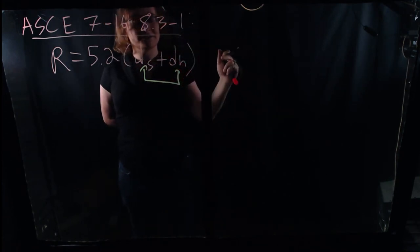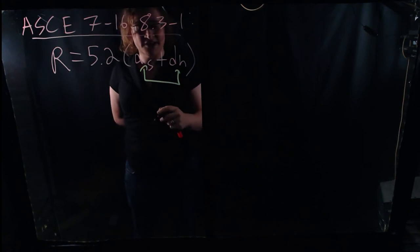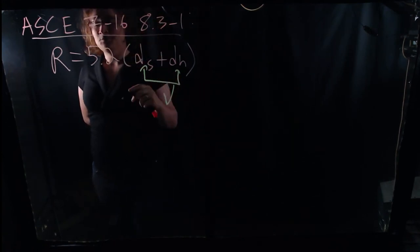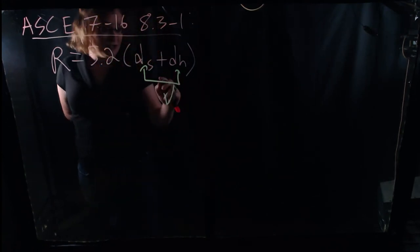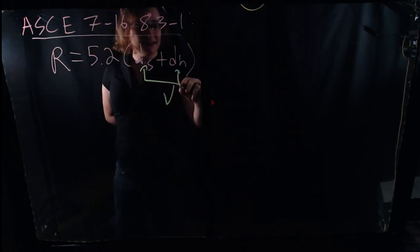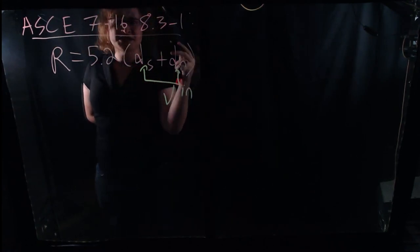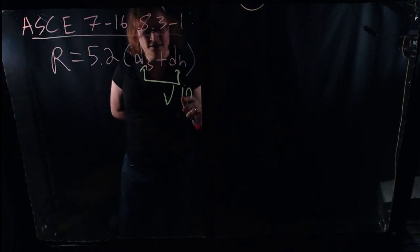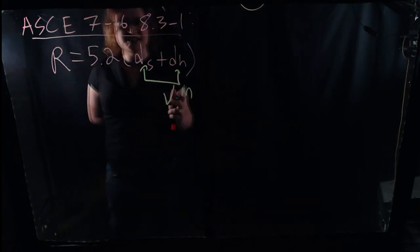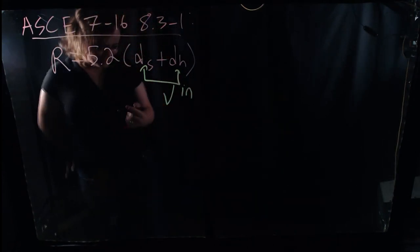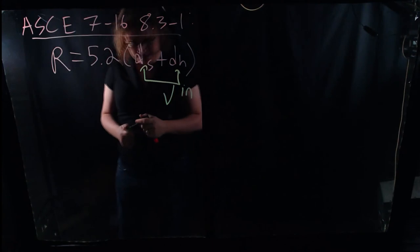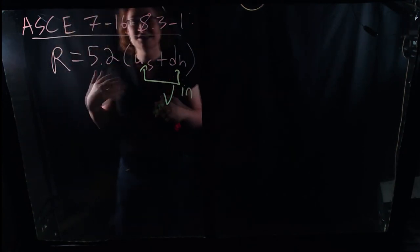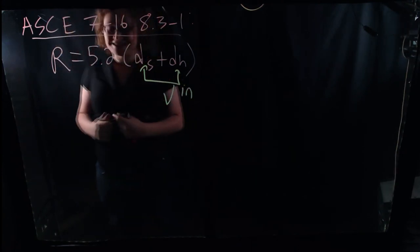There is one equation we need to consider: ASCE 7-16 equation 8.3-1. This is a rather important one. R is equal to 5.2 times (DS plus DH). DS and DH are just our properties as we've defined them: DS is the depth to the secondary inlet, and DH is the pressure head necessary for the secondary drainage system to fully dispose of the full peak storm design runoff. Keep in mind these are in inches, and there is a different equation in ASCE 7 for metric units.